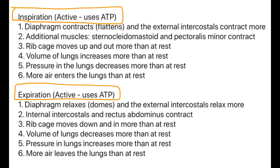Expiration is now active — it was passive at rest — and must use ATP as additional muscles contract. The diaphragm relaxes and domes, the external intercostals relax more than at rest, and now the internal intercostals and the rectus abdominis contract. This means the ribcage moves down and in more than at rest, decreasing lung volume and increasing lung pressure more than at rest, so more air leaves the lungs.